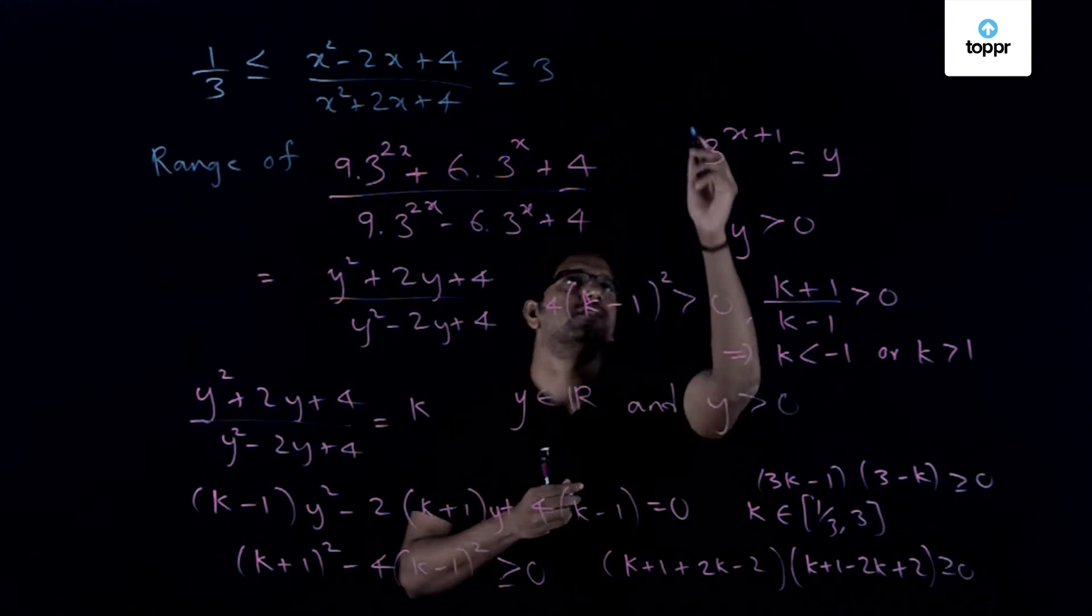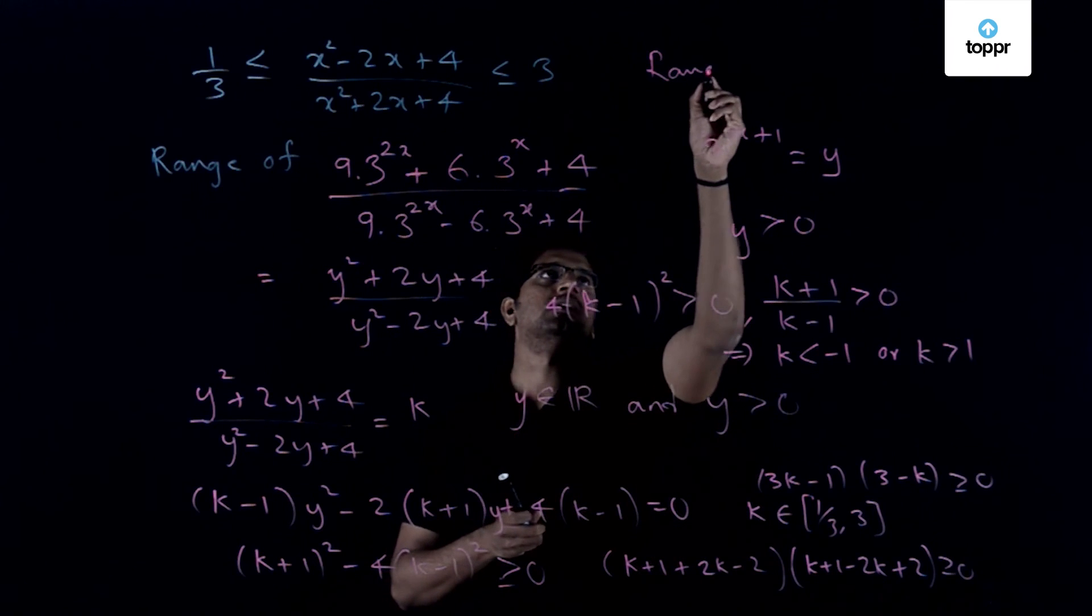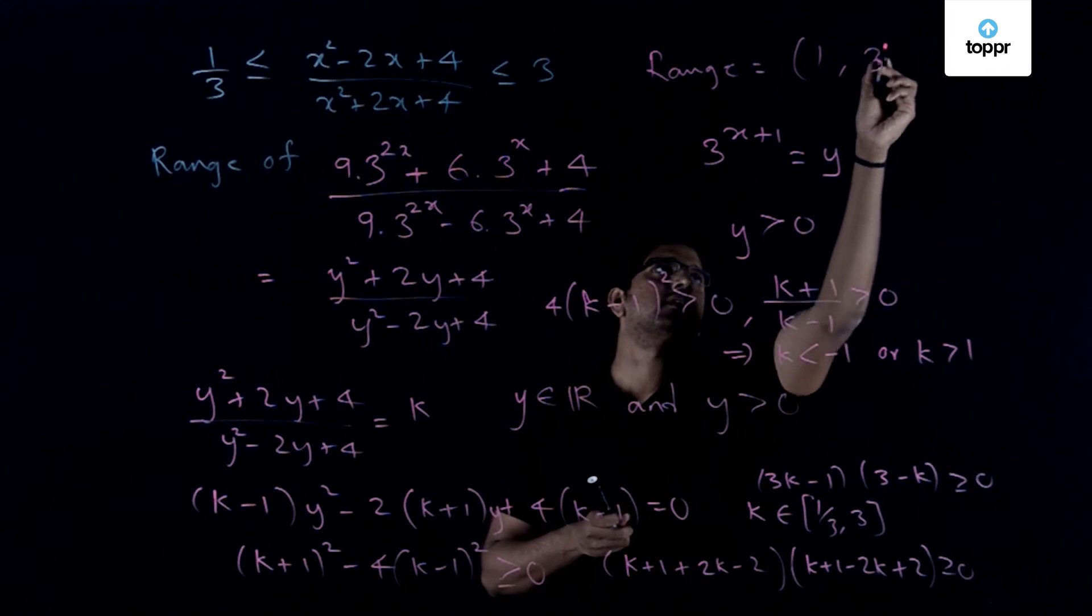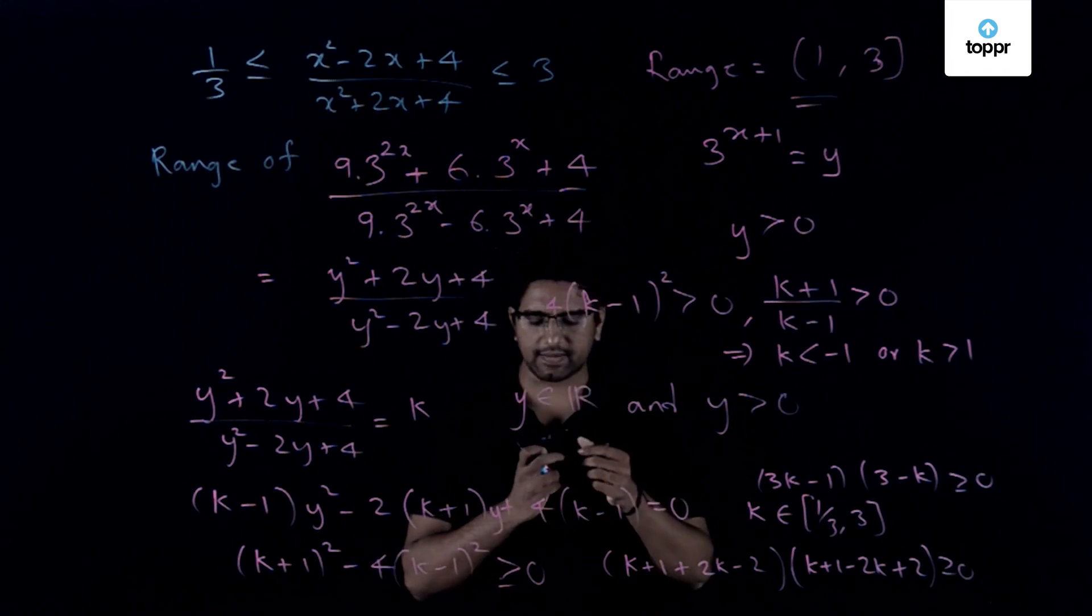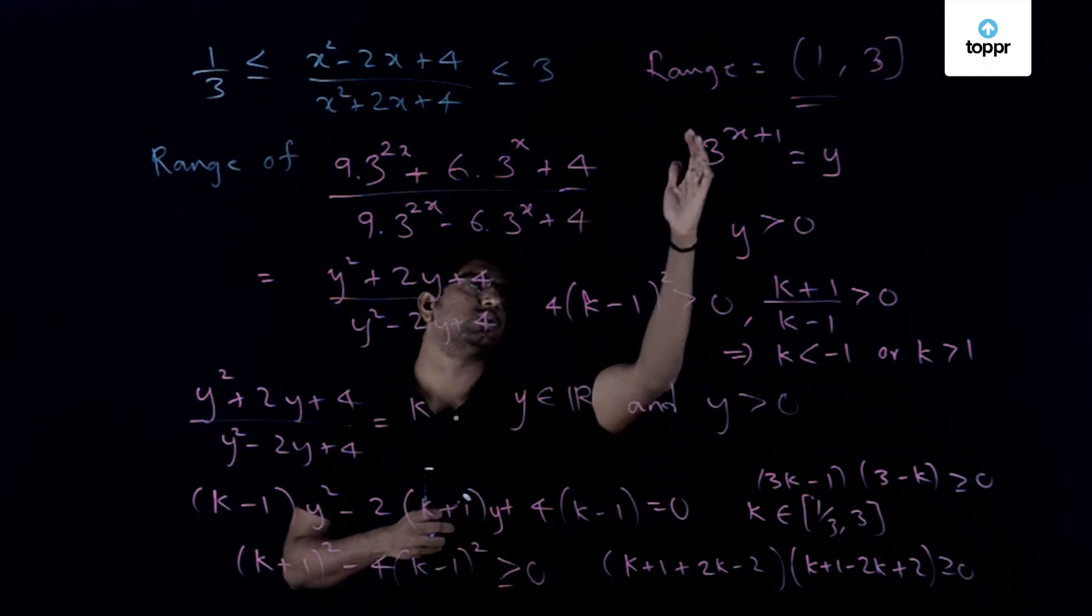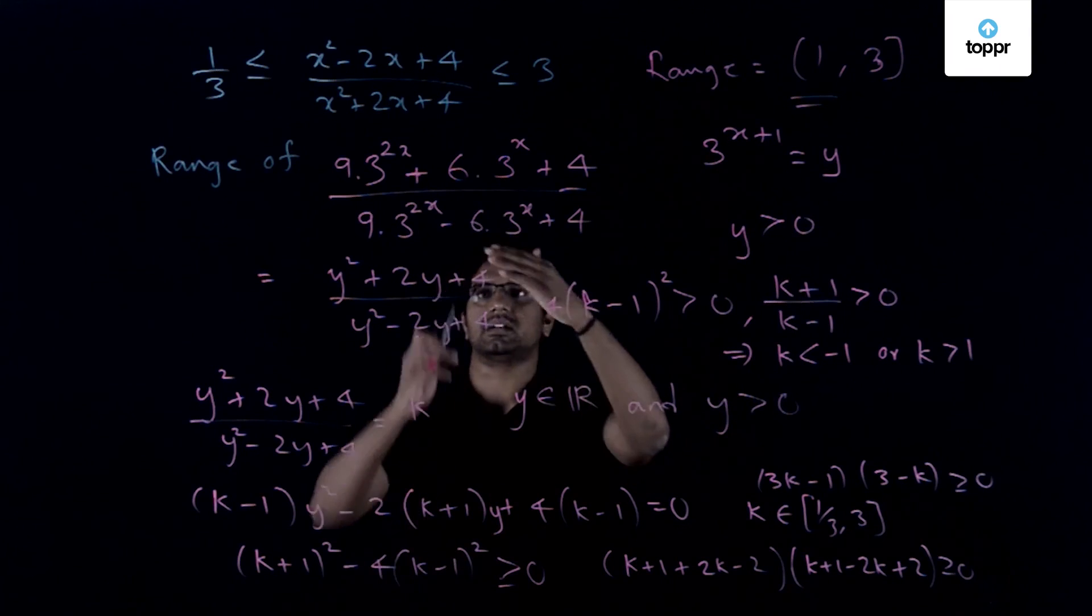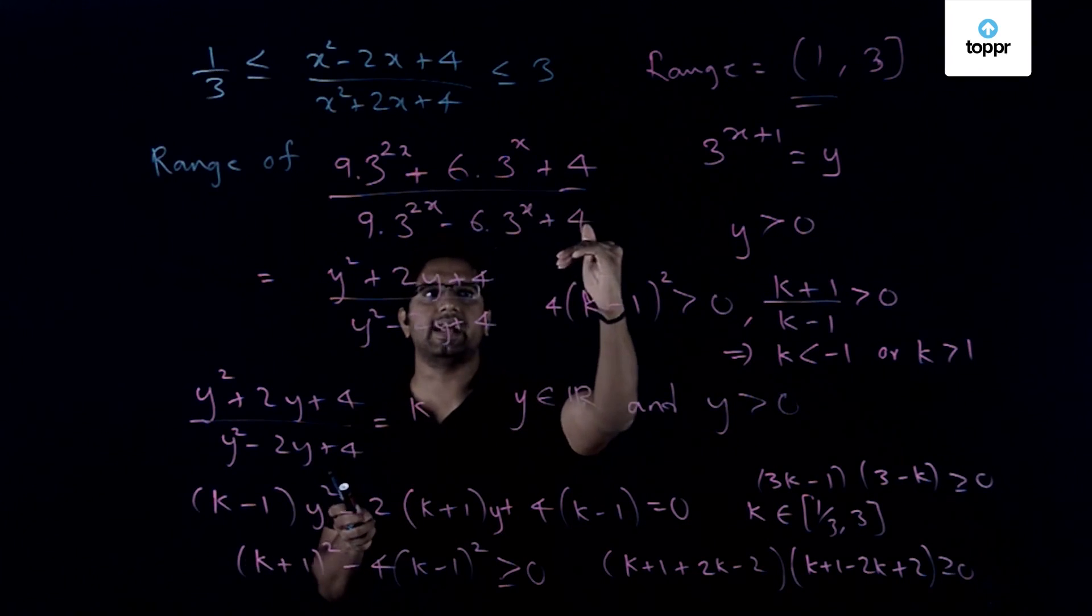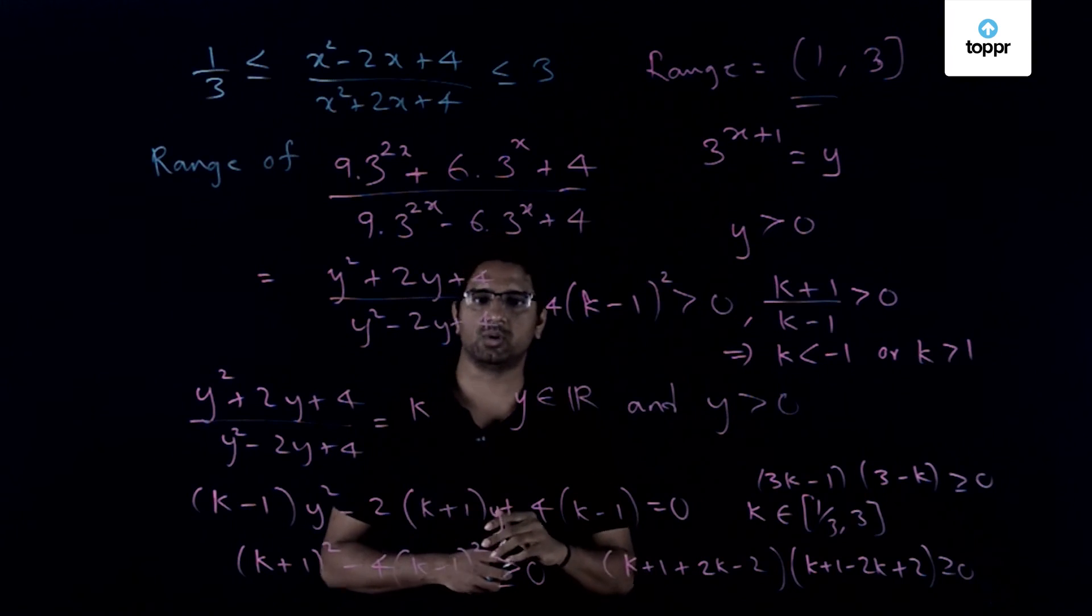So the value of this function, so the range is equal to (1, 3]. So again you have to be careful that it actually does not take the value 1. In fact, if you have a look at it you can see that the value approaches the value 1 when, if in this case when x tends to -∞ then both the numerator and the denominator become equal to 4 and that is how you get the value equal to 1.